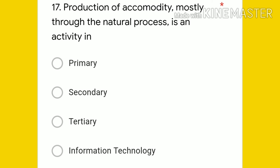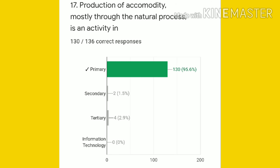Question 17: production of a commodity mostly through a natural process is an activity of which sector — primary, secondary, tertiary, or information technology? The answer is primary sector, because if production is done directly with the help of nature, it is called the primary sector. 130 students gave the right answer.